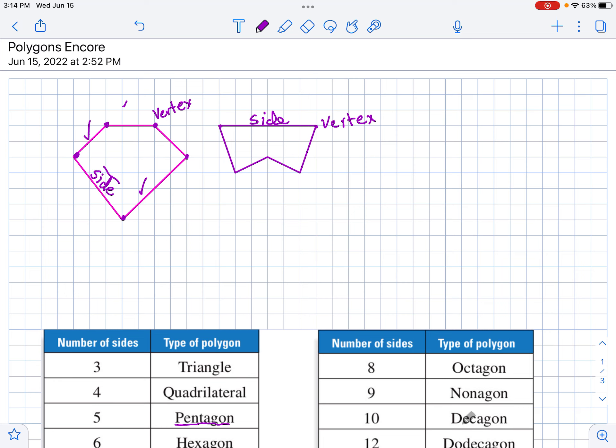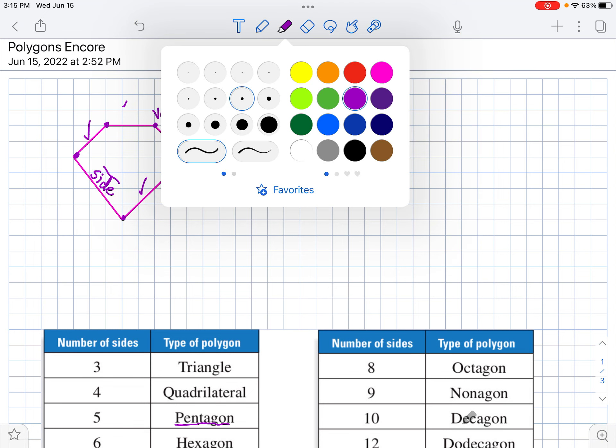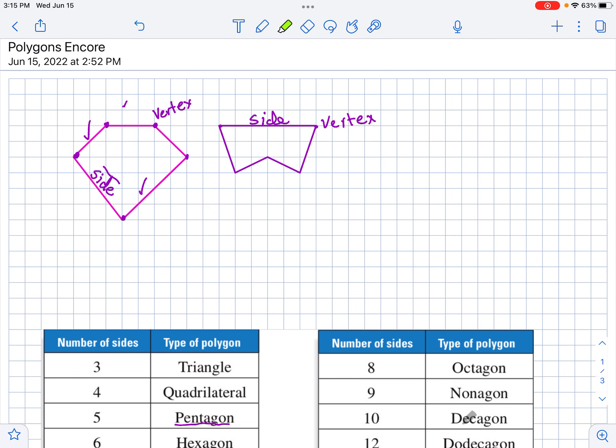Now, notice these two pentagons look a little different. If you, what we could do is we could think about the interior of these pentagons. The interior is this in here. Over here, the interior, you can see. And there's something fundamentally different about these. Notice, with this one here, we call this a convex polygon. And this one over here is a concave.